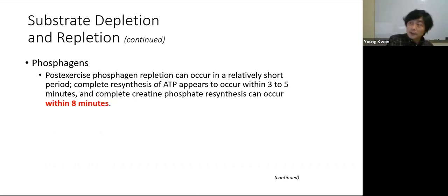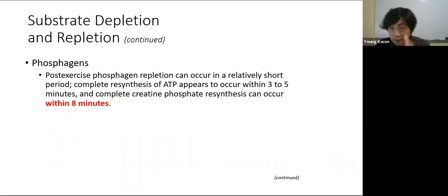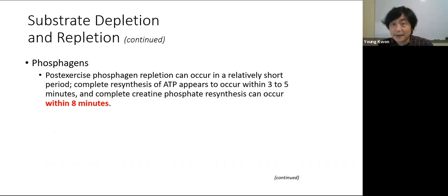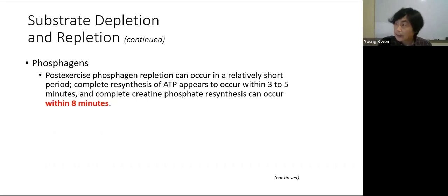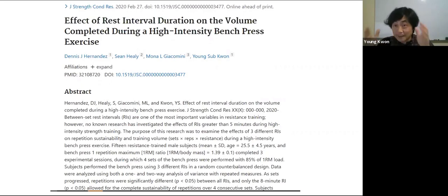Our textbook says it takes about 8 minutes to fully resynthesize creatine phosphate. To really use this concept practically, I posted an article studied by a graduate student at Humboldt State University. In the study, subjects performed bench press at 85% of 1RM — typically 6-7 repetitions until failure — then rested and repeated.